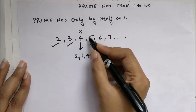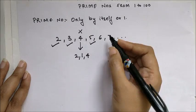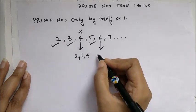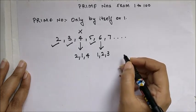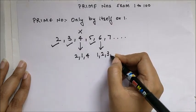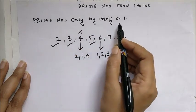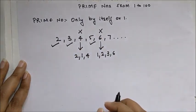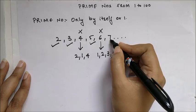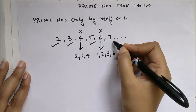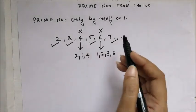Moving on — 5 also gets divided by itself and 1 only, so 5 is also a prime number. But for 6, it gets divided by 1, by 2, by 3, and by itself, so 6 does not fit the definition of prime numbers and is not a prime number. For 7, it gets divided only by 1 or itself, so 7 is also a prime number.